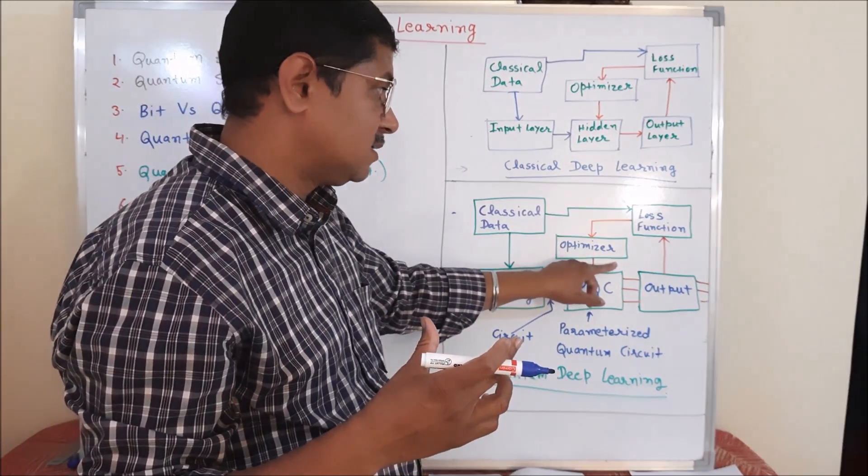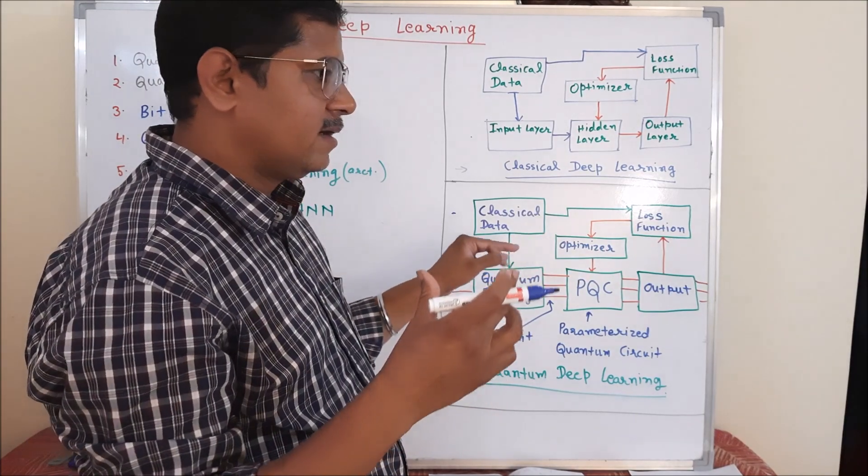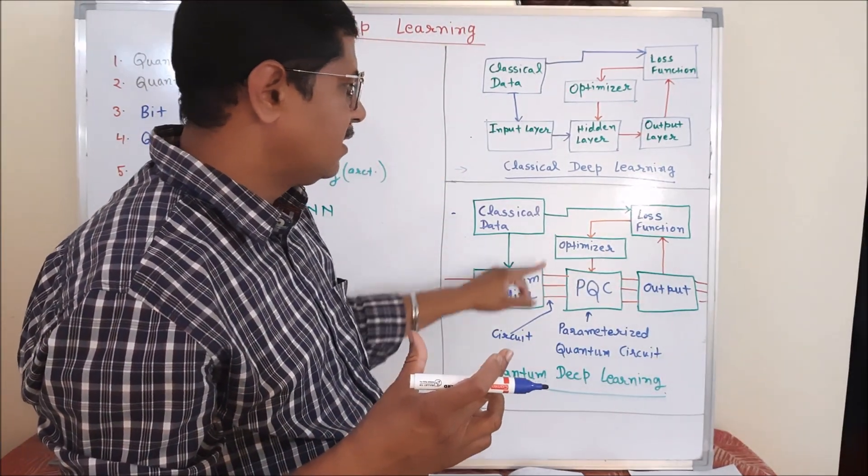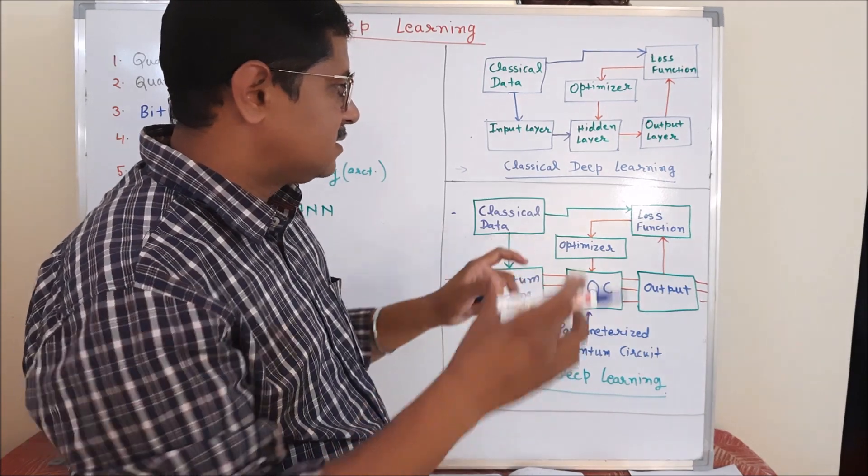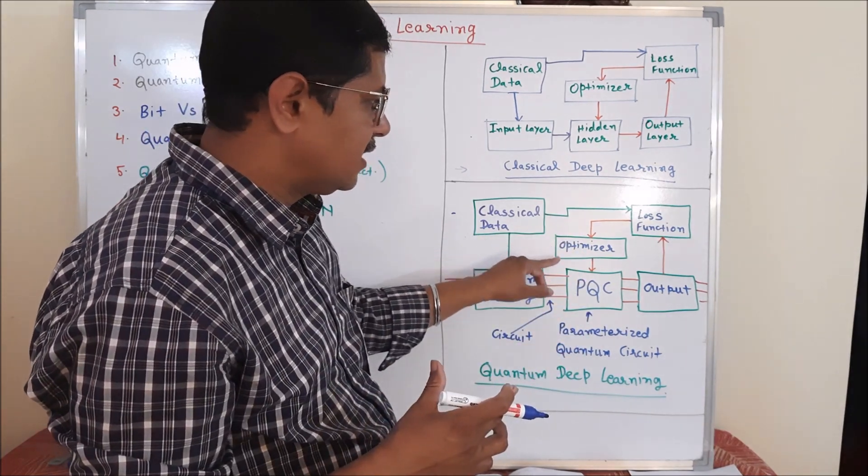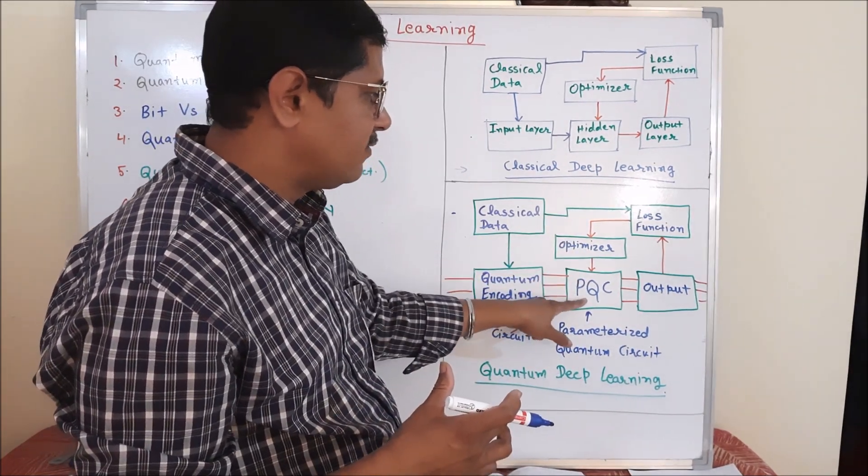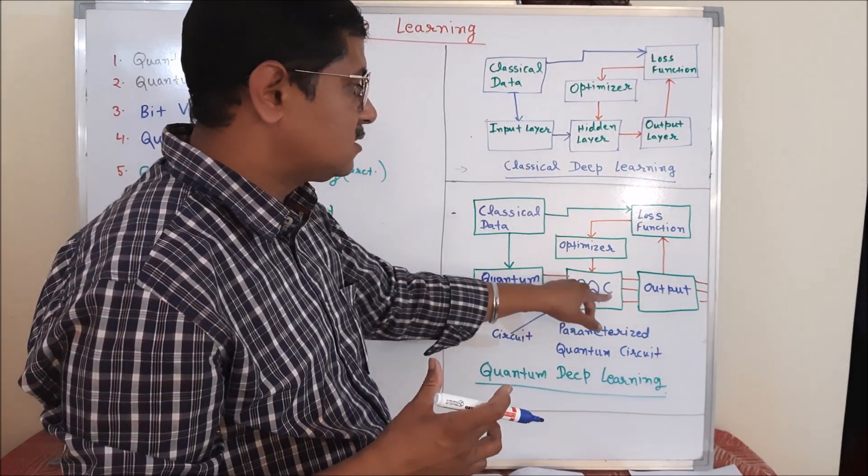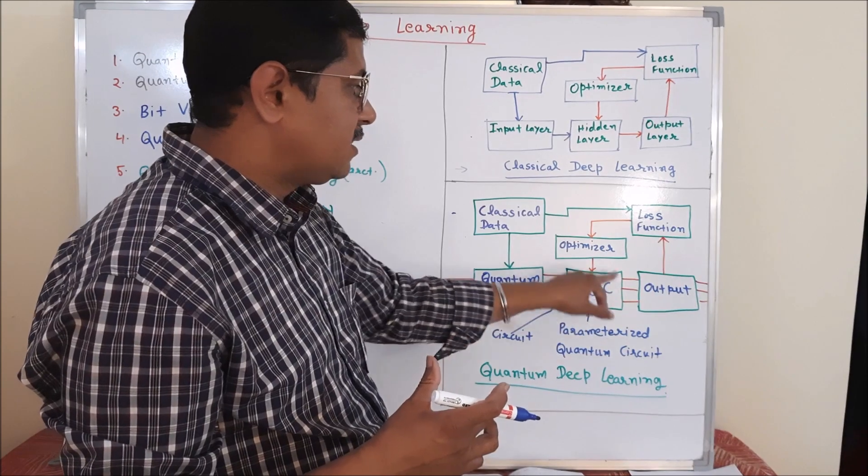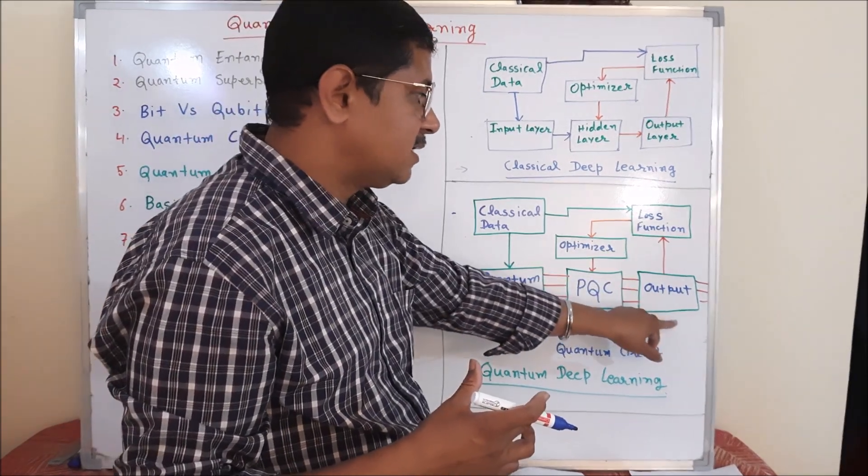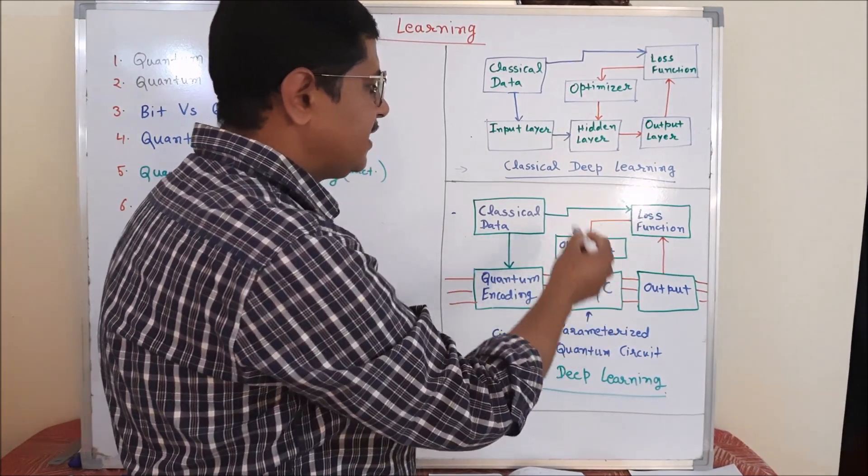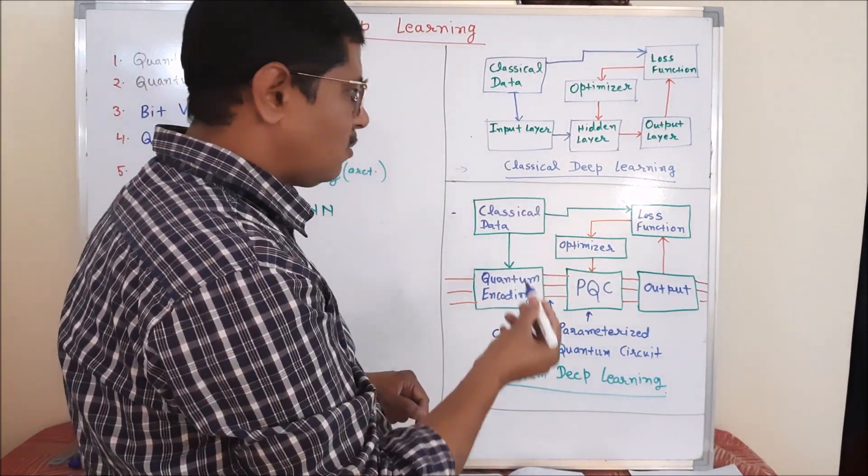And then we have some optimizers also like we had Adam and other things in quantum deep learning. We apply those optimizers and then with gradients identify those parameter values and weights and pass it through the parametrized quantum circuit to update their weight so that it can generate some output. And we continue the cycle until we reach some stopping criteria.